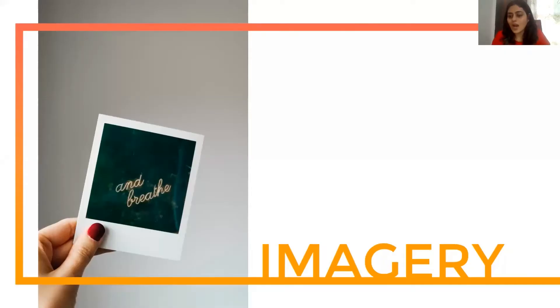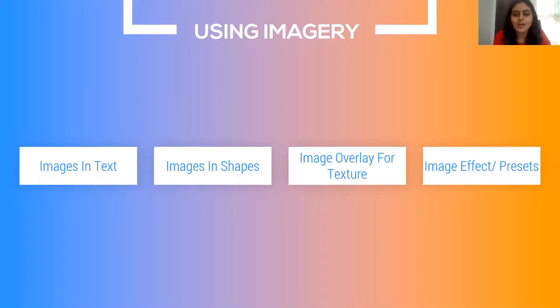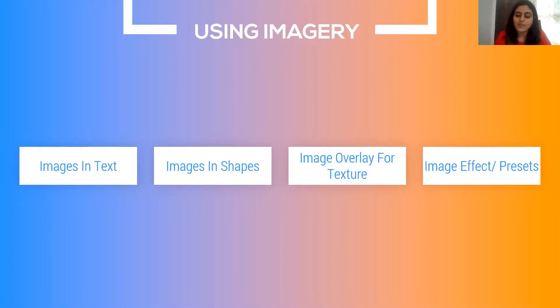You can find the licenses when you download images, so try and find good copyright-free images for your presentations. Now, how to use imagery in your presentations — there are four things we're going to learn. Two we've already covered, but I'll skim through them. We'll learn how to place an image inside text, place an image inside a shape, use images as a texture by overlaying two images, and how to use image effects and presets.